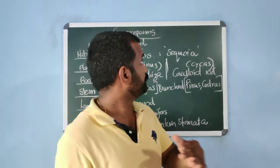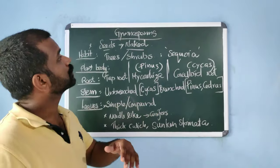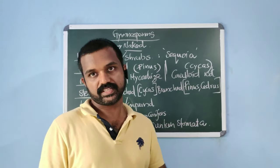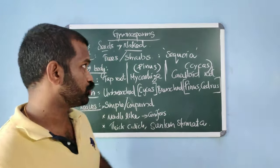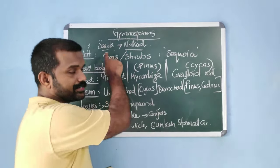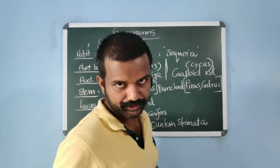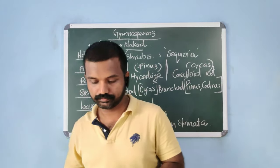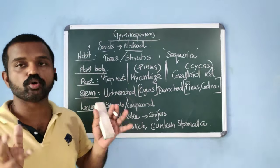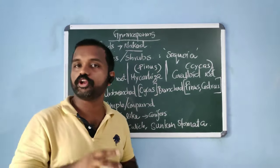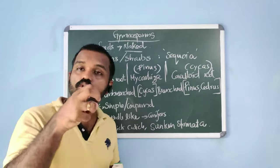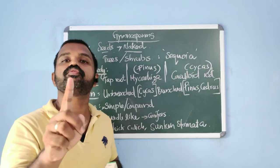In this video we will see Plant Kingdom Part 3, which starts with gymnosperms. Gymnosperms are naked seed-bearing plants. Their seeds are naked because the ovule is not enclosed — that is, seeds are not enclosed in a fruit.